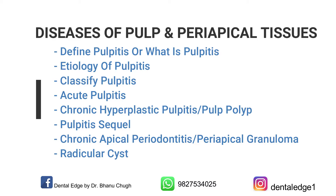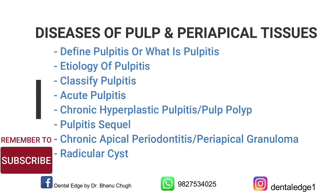Then chronic hyperplastic pulpitis, or pulp polyp — this is another very commonly asked question to write in an exam. It can also be asked in a viva that what is the other name for chronic hyperplastic pulpitis or pulp polyp. Then the sequel of pulpitis.